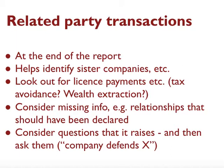Related party transactions, found at the very end of an annual report or company's accounts, not only identify transactions between companies but can identify sister companies as well. It's sometimes a place where you might find mentions of licence payments to sister companies — one way some companies avoid tax or extract wealth from one country into another. One thing to consider is that there might be information missing, as happened in this story where one relationship was not declared when it should have been. This is generally a starting point rather than an end point, and obviously you should ask the company itself for a right of reply before publishing.